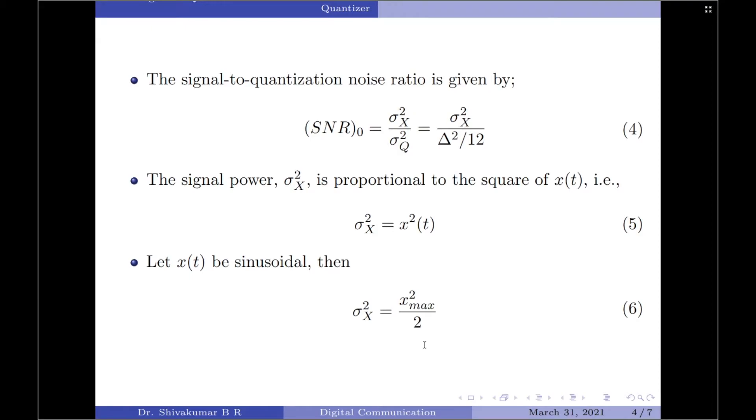Continuing, we will now write an expression for the signal to quantization noise ratio, which is given as SNR_0 equals σ_X² divided by σ_Q², which equals σ_X² divided by Δ²/12. This derivation was done in one of my previous videos on quantization noise and signal to noise ratio. I would like to request you to kindly refer to that video for more information on this derivation.